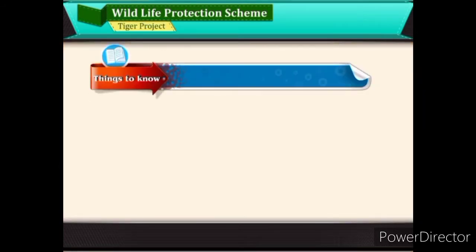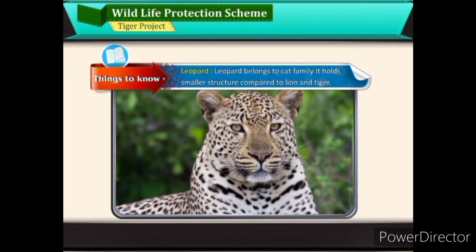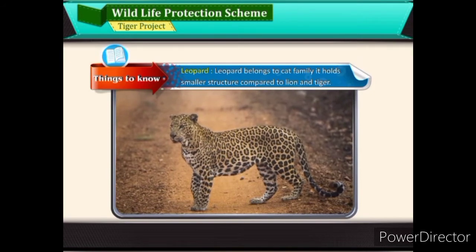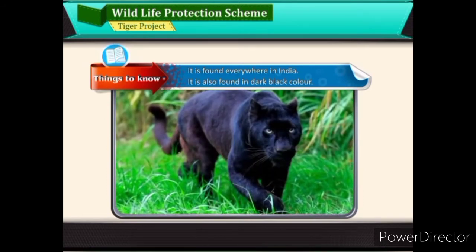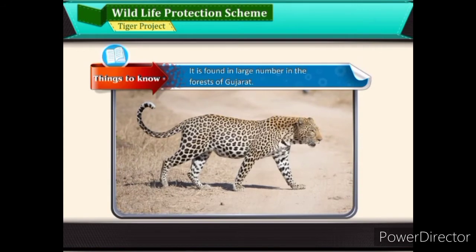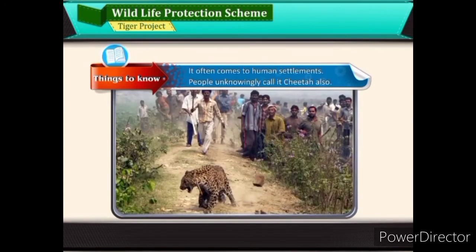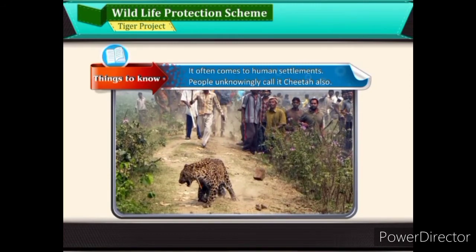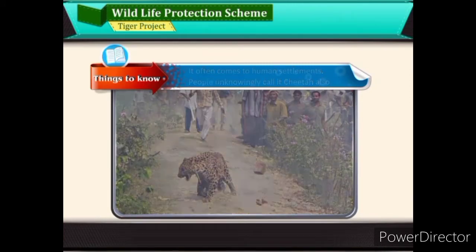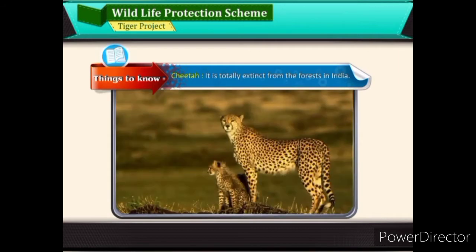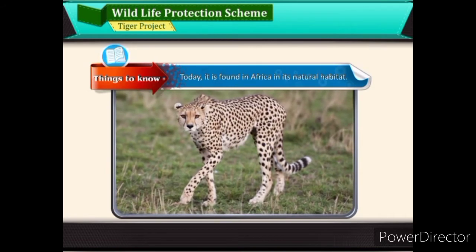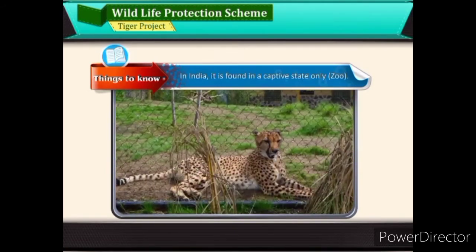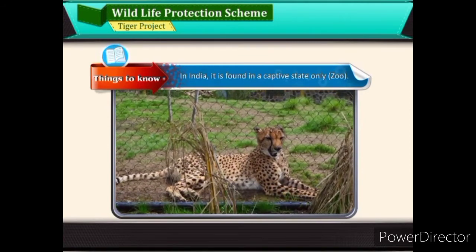Things to know — Leopard: The leopard belongs to the cat family. It holds a smaller structure compared to lion and tiger, and is found everywhere in India, including in dark black colour. It is found in large numbers in the forests of Gujarat and often comes to human settlements. People unknowingly also call it cheetah. Cheetah: The cheetah is totally extinct from the forests of India. Today it is found in Africa in its natural habitat, and in India it is found only in a captive state, that is, in zoos.